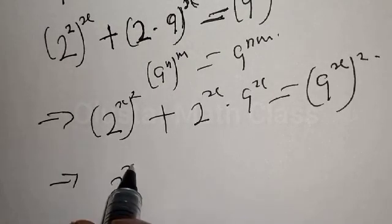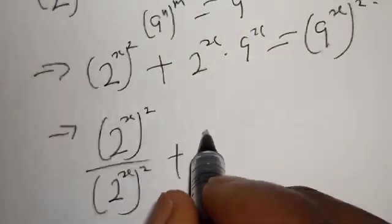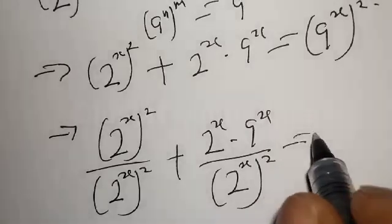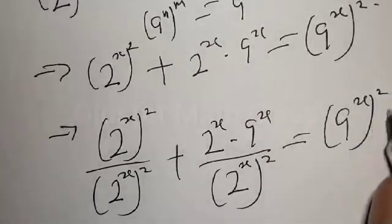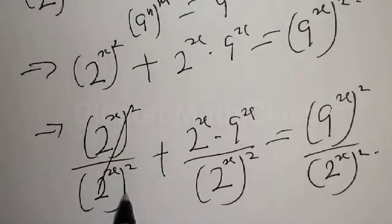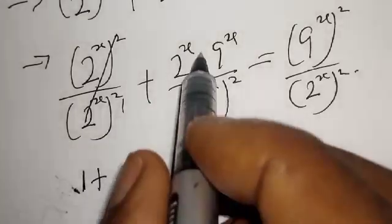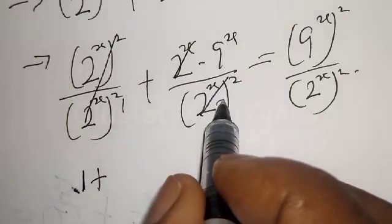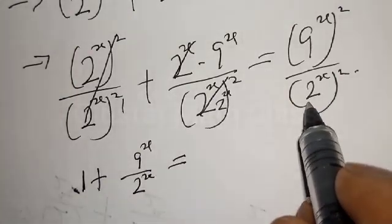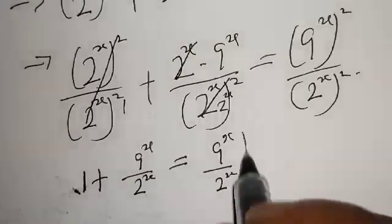This implies that we have 2 raised to power 2x over 2 raised to power 2x, plus 2 raised to power x times 9 raised to power x over 2 raised to power 2x, is equal to 9 raised to power 2x over 2 raised to power 2x. The first term cancels to 1. The middle term simplifies: we cancel one factor of 2^x, giving 9 raised to power x over 2 raised to power x.